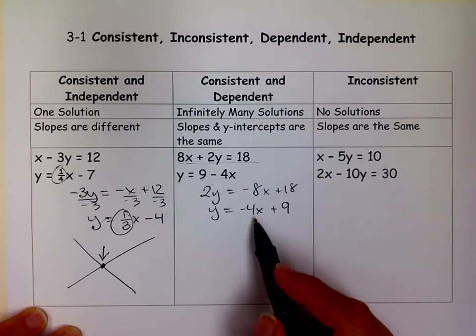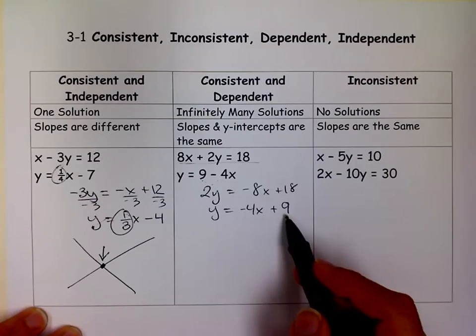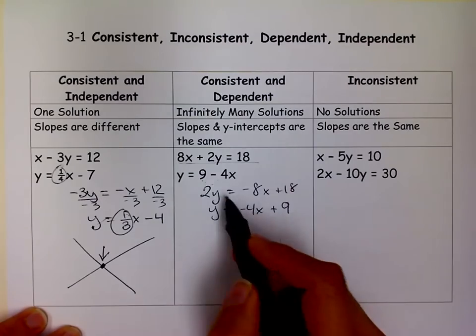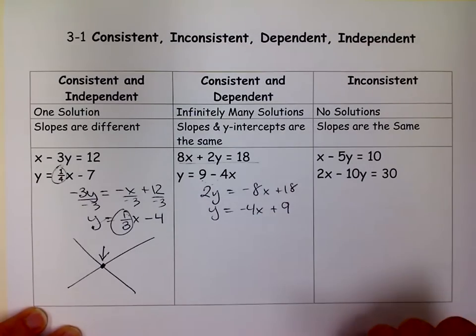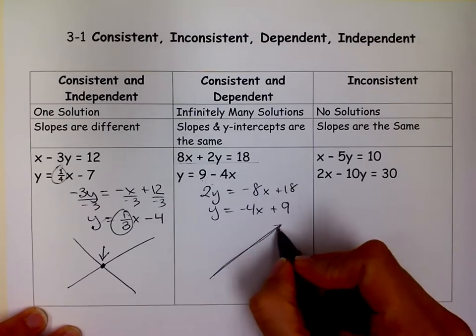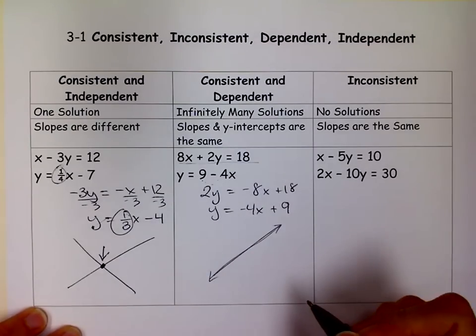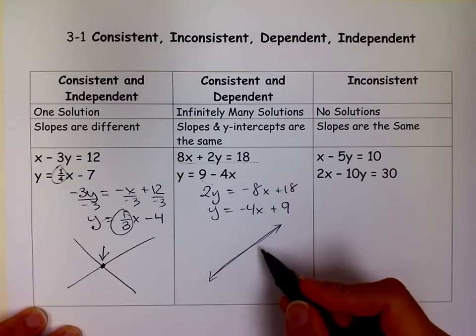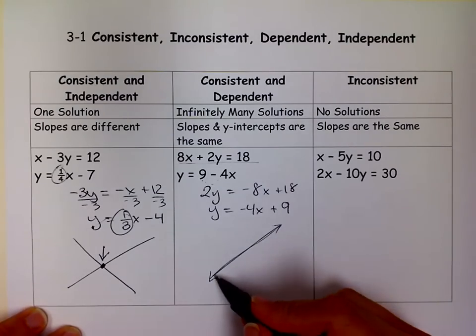So these are not only parallel, but they have the same y-intercept. So they have the same slopes, the same y-intercepts. That means it's the same line. So basically, I just graphed another line on top of the one I was already at. So because they're right on top of each other, they intersect in every single point.